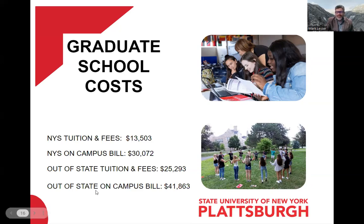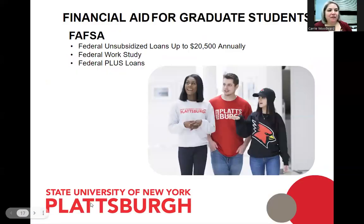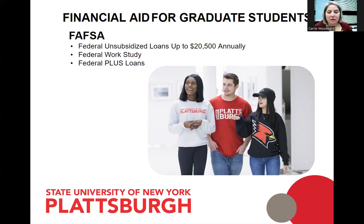There is federal financial aid available to graduate students. If you're a U.S. citizen or permanent resident, you're eligible to apply for federal programs by submitting the FAFSA, just like undergraduates. Graduate students are eligible for unsubsidized loans up to $20,500 per year, federal work study money, and federal PLUS loans if you've maxed out the unsubsidized loans.